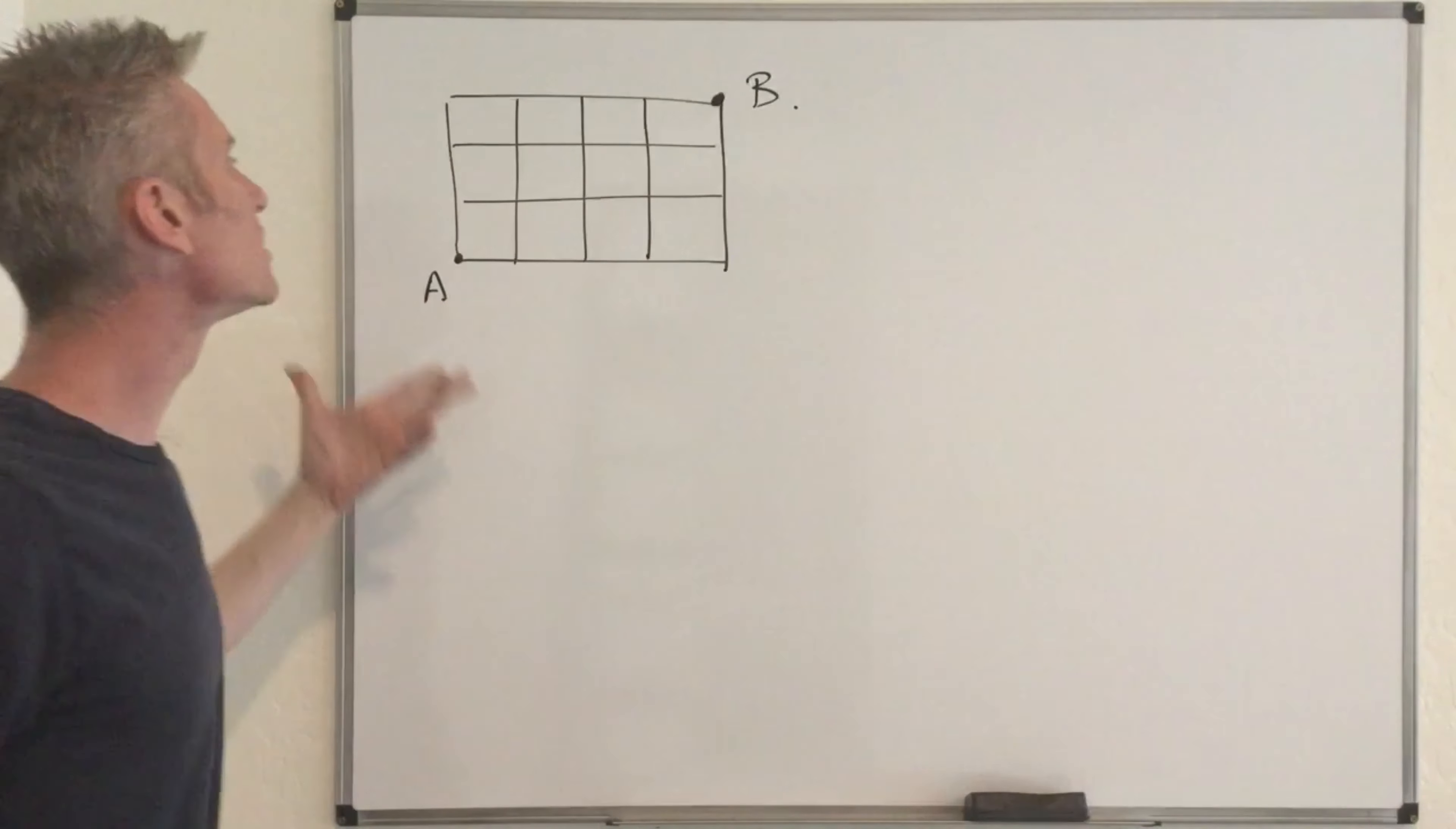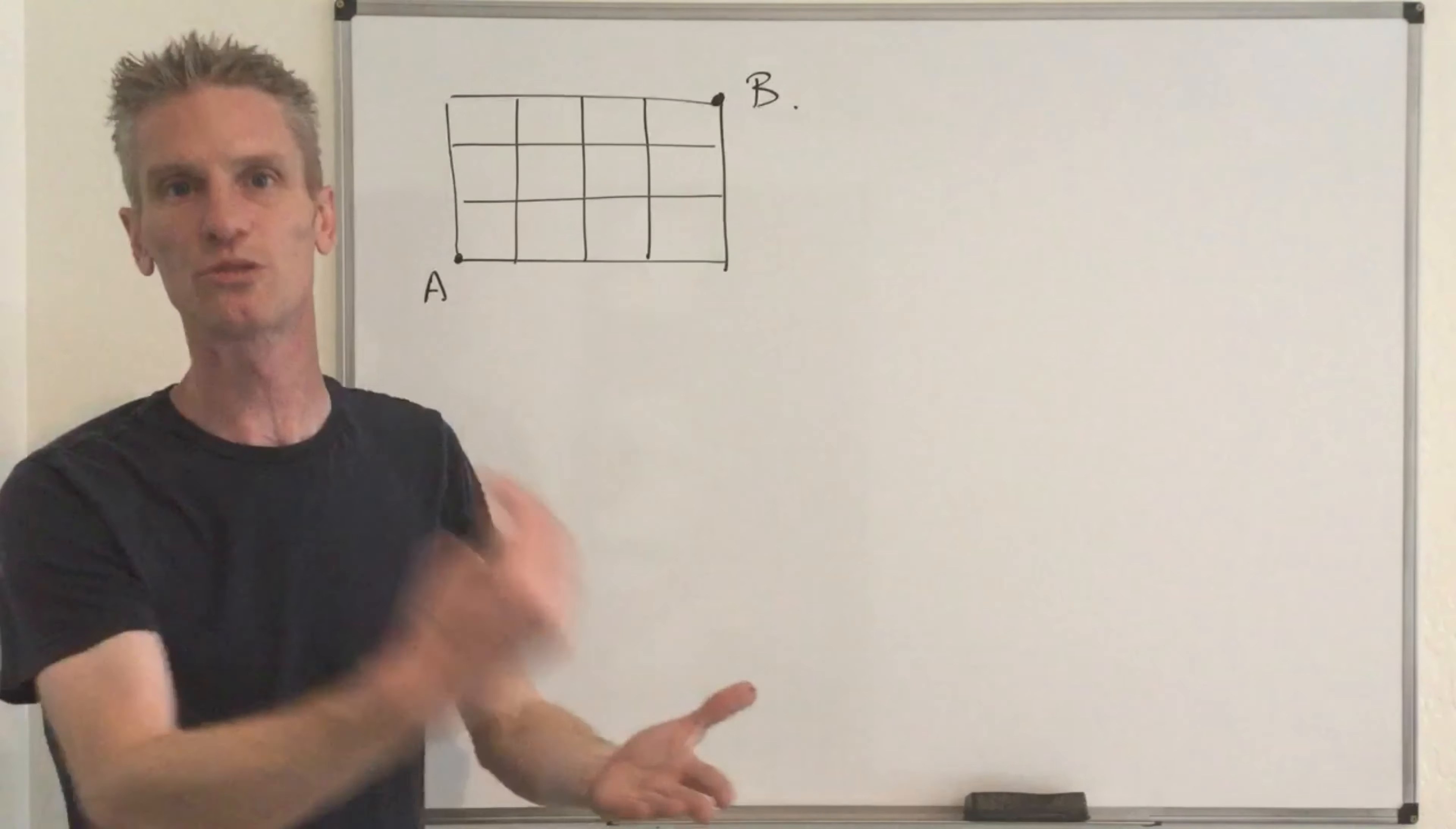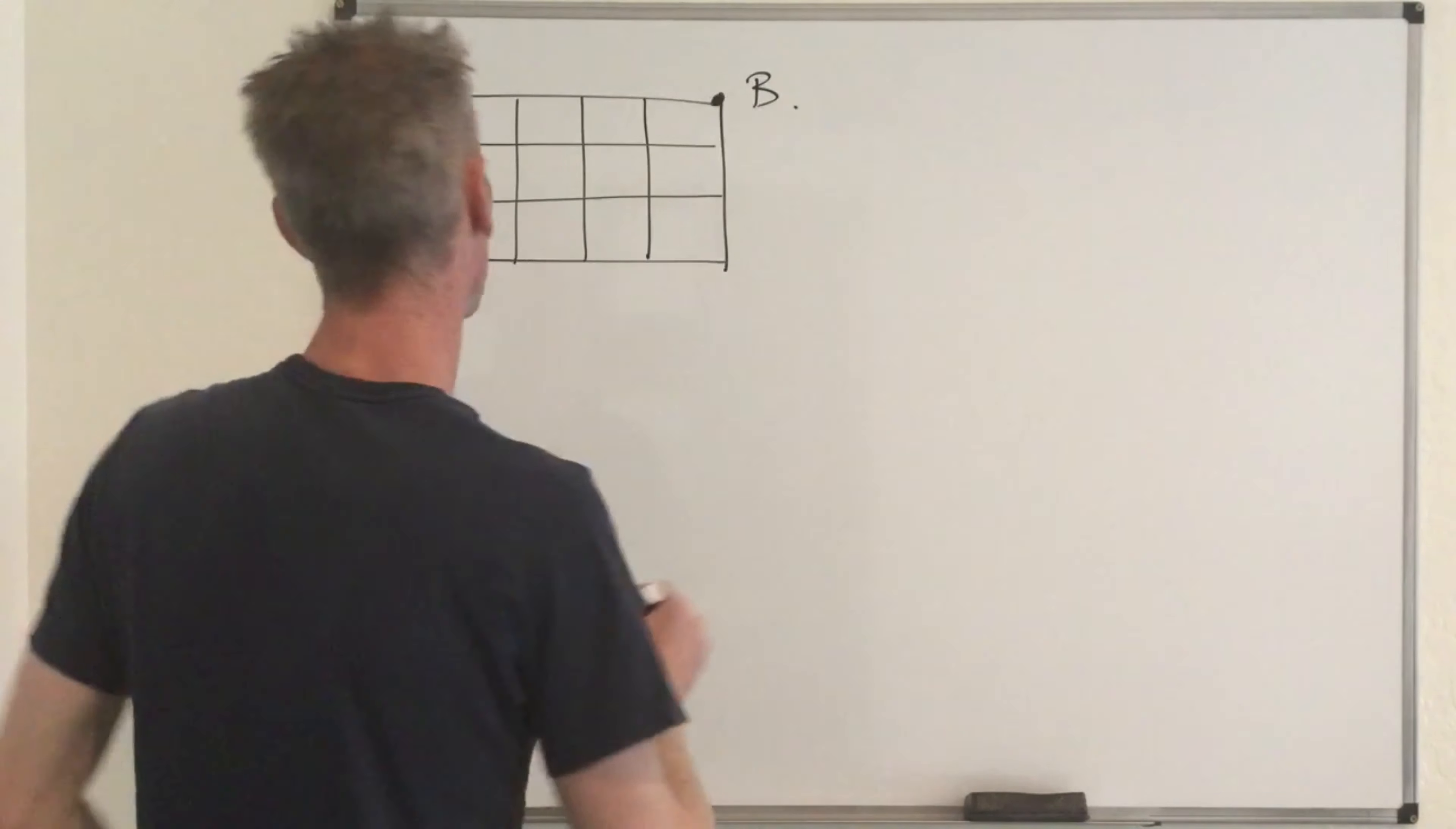And so one possible motivation for that would be, for instance, let's assume that this grid is in fact a street network and you are at point A and you want to drive to point B. And obviously to do this as fast as possible, you don't want to go in the wrong direction. And so you can only go either east or north on the map. And so again, the question is to find the total number of possible paths going from A to B.